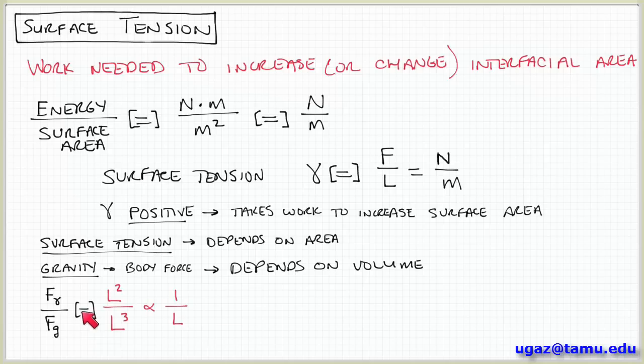So if we compare the magnitudes of these two forces, like the ratio of the surface tension force, F gamma, to a gravitational body force, Fg, their dependence on length: the surface tension force depends on area, length squared. The body force depends on volume, length cubed. So the ratio of these forces scales as 1 over the length.